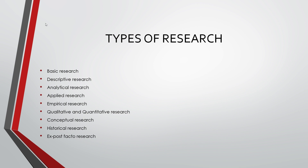The second type is descriptive research, which provides an accurate portrayal of characteristics of a particular individual, situation, or group. It describes the present state of affairs and the researcher has no control over the variables — he can only report what has happened or is happening. The third type is analytical research, which is based on data or information already available with the researcher. The available data are analyzed to draw conclusions and it involves critical thinking. Doctors, students, psychologists, etc., use analytical research.